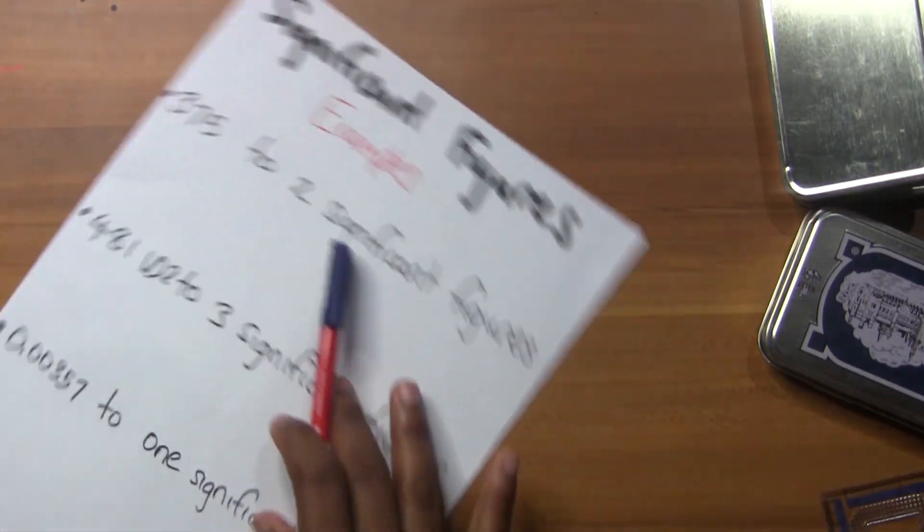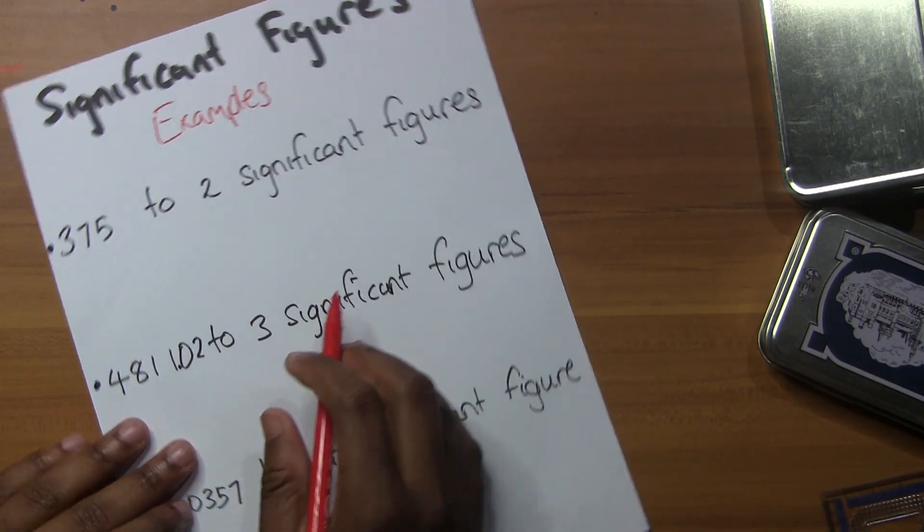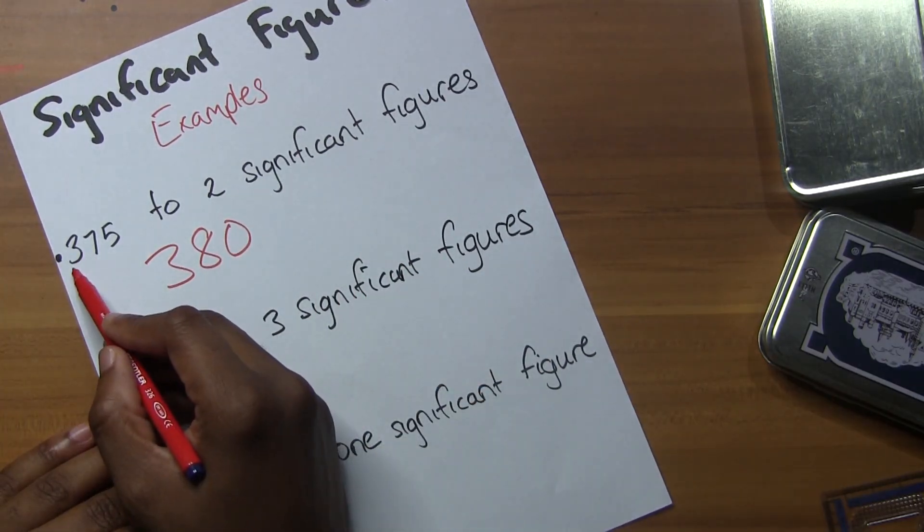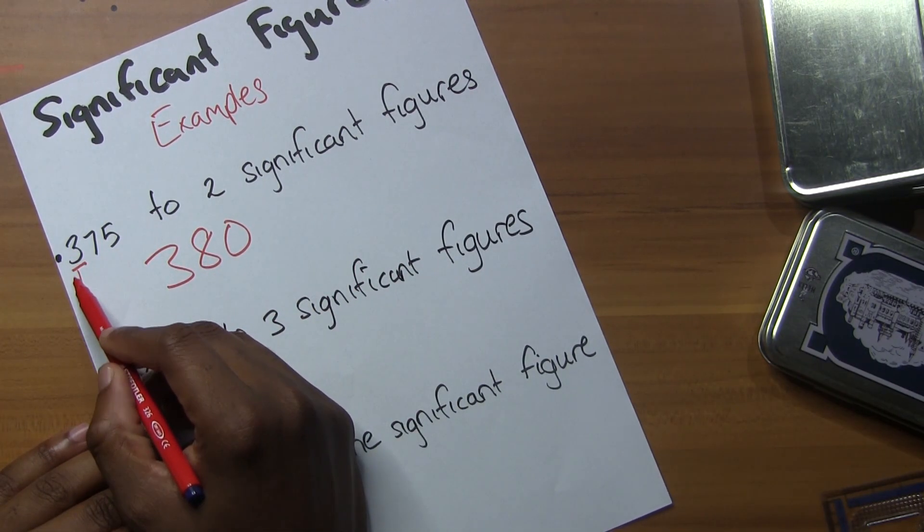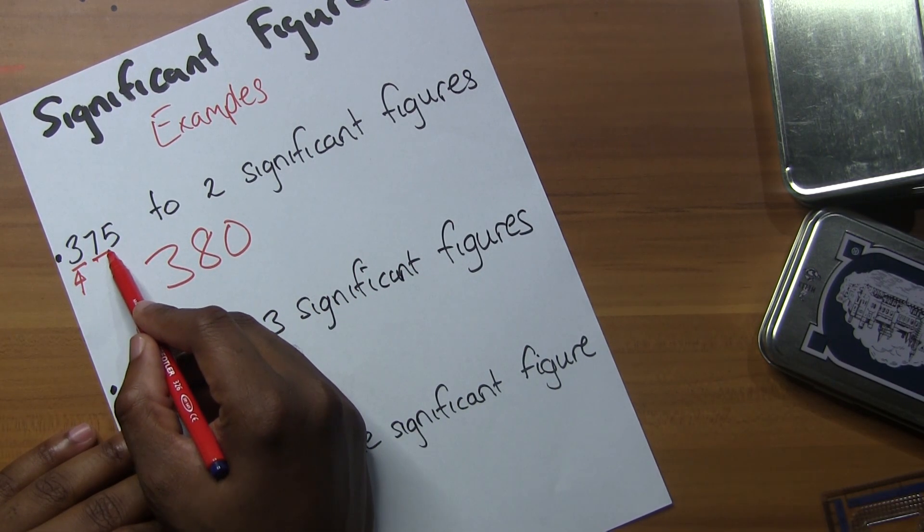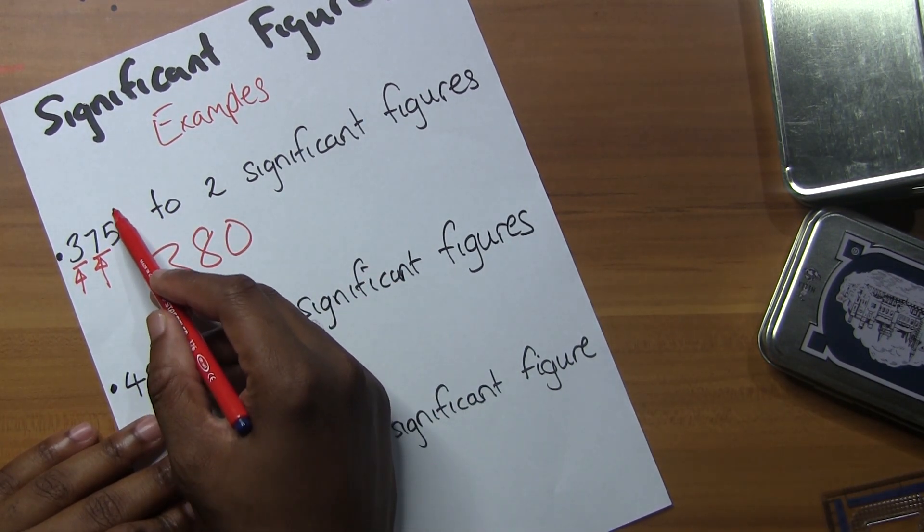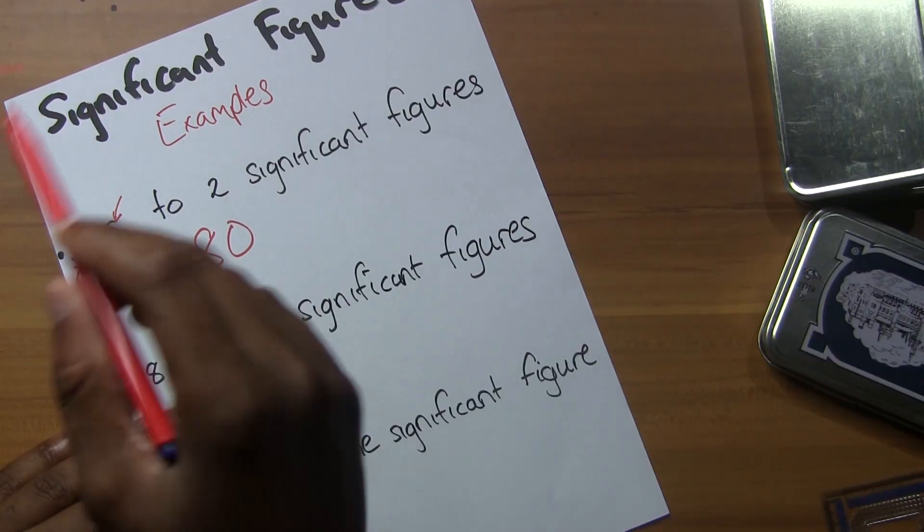375 to two significant figures: the answer is 380. We look at the first two significant figures, then change the rest to zero. But since the third digit is 5, which is 'five and over', we need to round up by one. So we get 380.